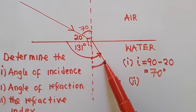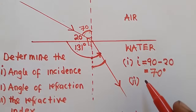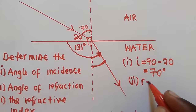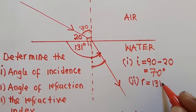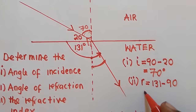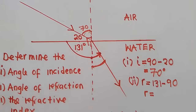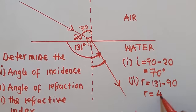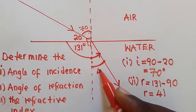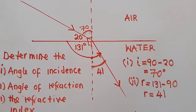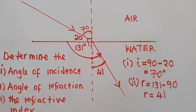So the angle of refraction equals 131 minus 90, which gives us 41 degrees. That is the angle of refraction. So we've now calculated the angle of incidence as 70 degrees and the angle of refraction as 41 degrees.